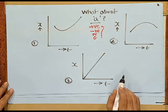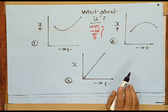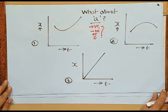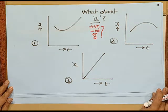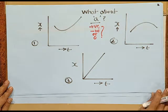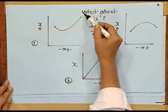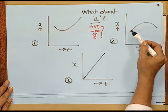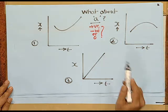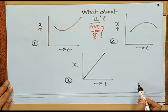Now let us look at these graphs being presented. All three graphs show variation of position with time. Graph 1 shows a concave curve, graph 2 shows a convex curve, and graph 3 shows a straight-line variation of position with respect to time. What can you say about the acceleration in these three cases — is it positive, negative, or zero?